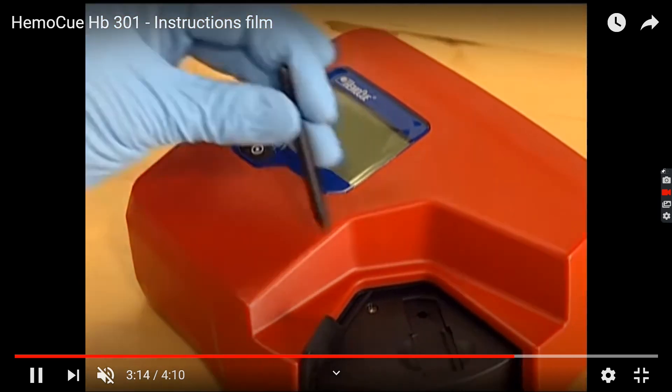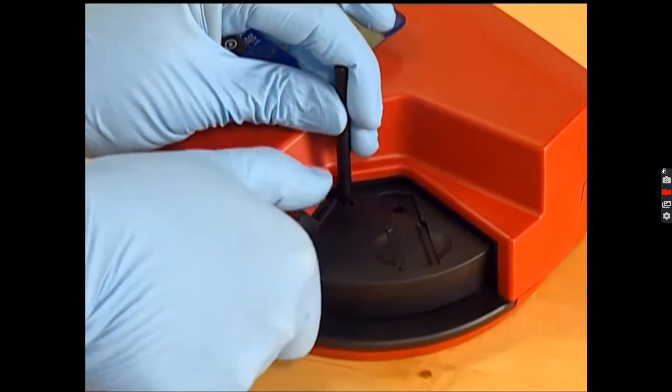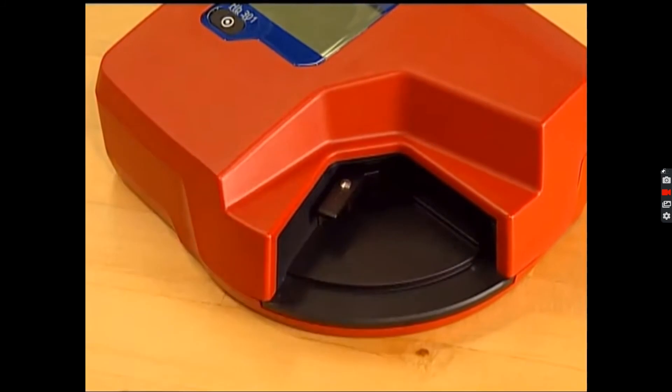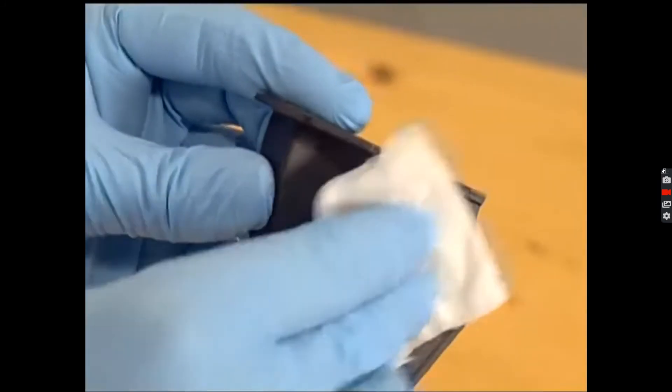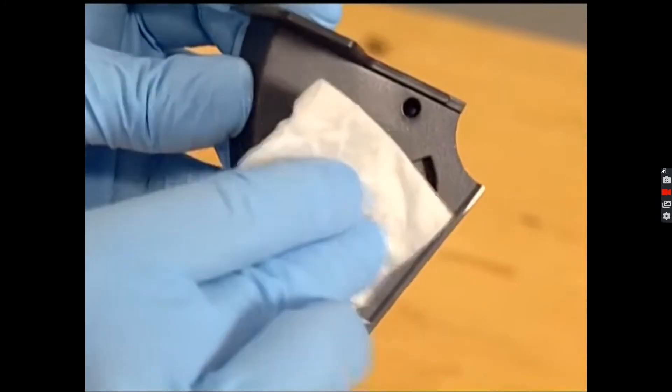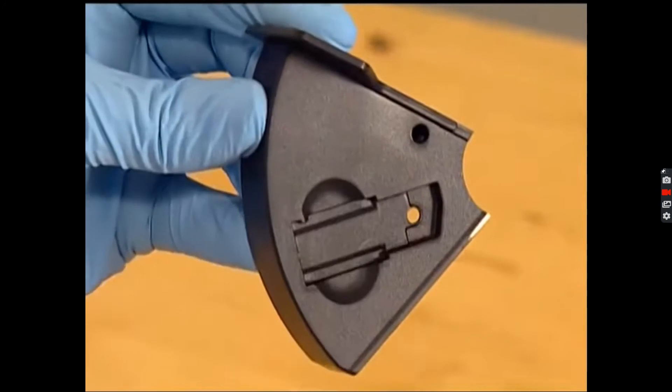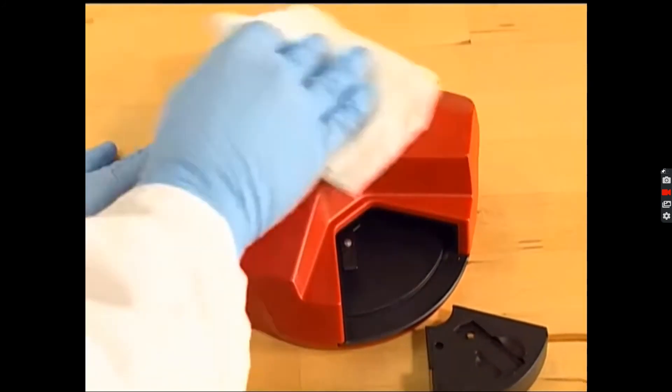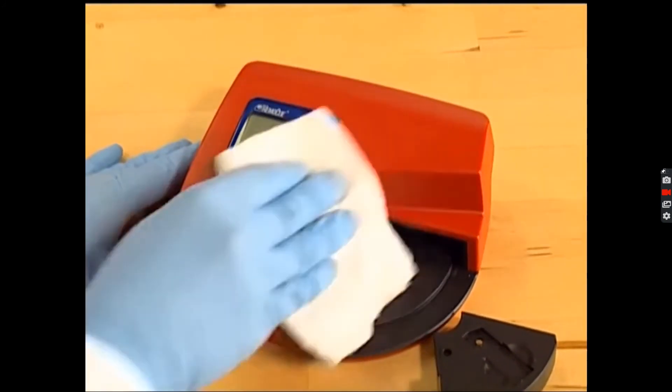Once in a while, the machine will need to be cleaned. Switch off the machine. As you can see here, you can remove the receptacle of the microcuvette and then clean it with a slightly moist paper without using any aggressive detergents.